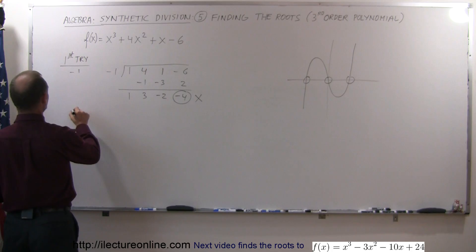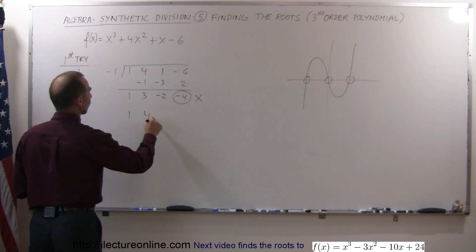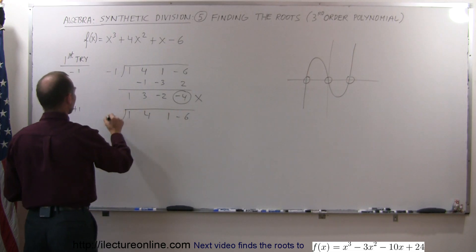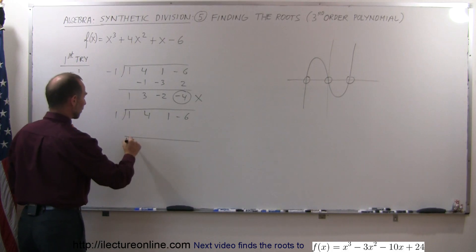Okay, let's try positive 1. And again, we put in our coefficients, 1, 4, 1, negative 6. Then our division sign, now it's a positive 1. Put our line down here. Drop the first number, 1.